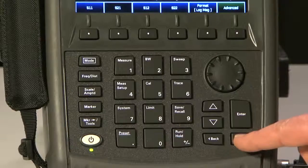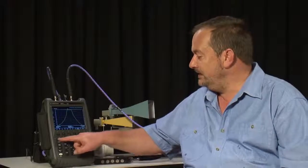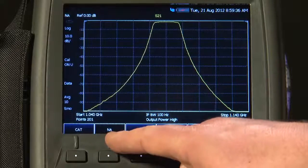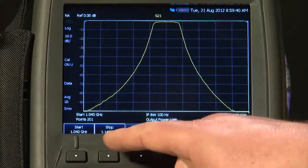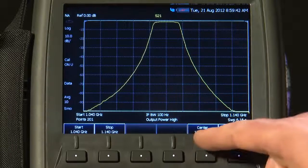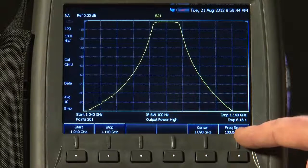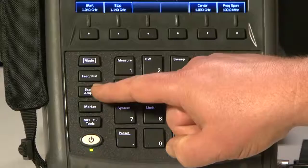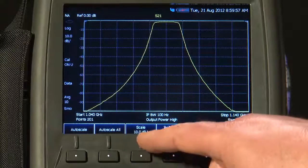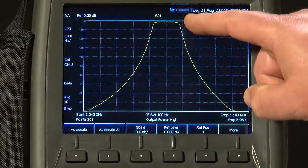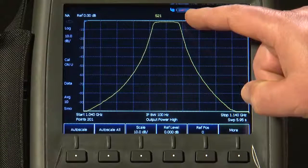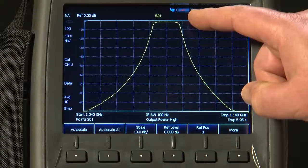Using the Mode button, I have selected Network Analysis. Using the Frequency button, I have set a Start and Stop or Center and Span for the frequency range. By pressing the Scale Amplitude button, I have set a scale of 10 dB per division and a reference level of 0 dB, so the top reference line of the display is showing 0 dB insertion loss.